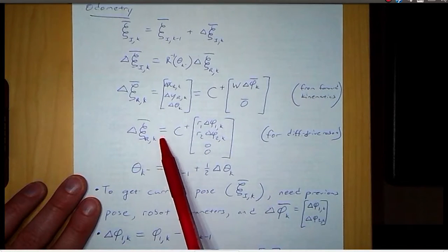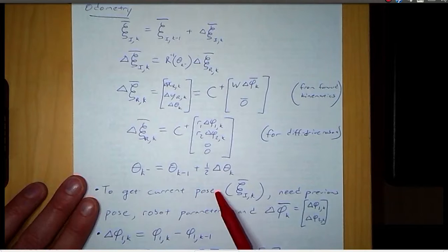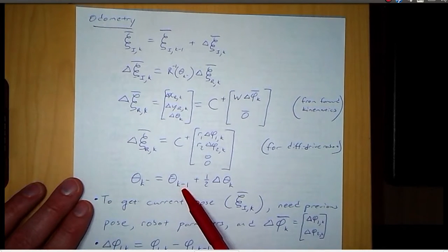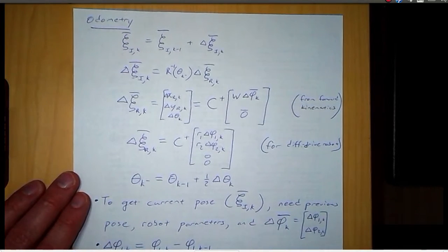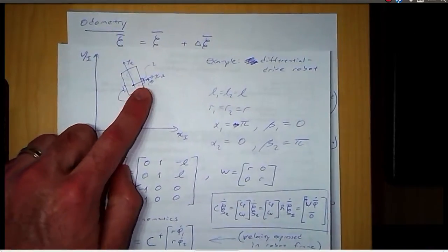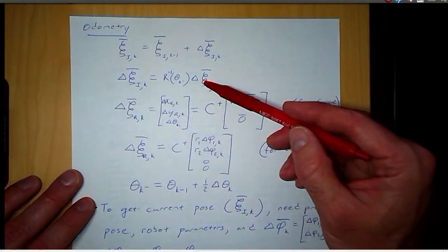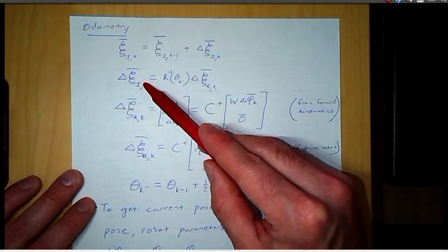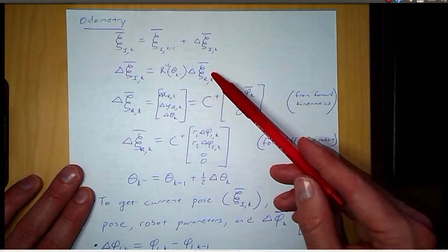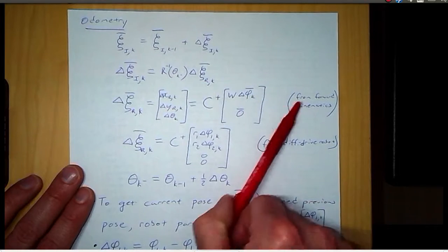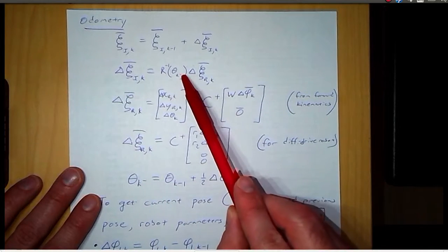Now that we have delta psi r at time k, that means we have delta theta k. We're able to compute the average orientation of the robot, so the average between the previous orientation and the current orientation. Orientation refers to the angle between the robot x axis and the world x axis, theta. The reason we want this average is because we're transforming this vector into the inertial frame. In order to have the most accurate estimate, we want to rotate this vector about some angle in between the previous and current orientation, which is why we use an average angle in the rotation matrix.